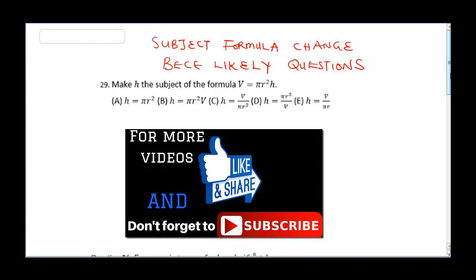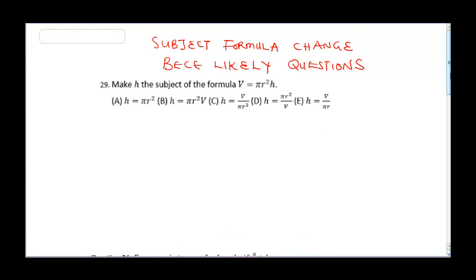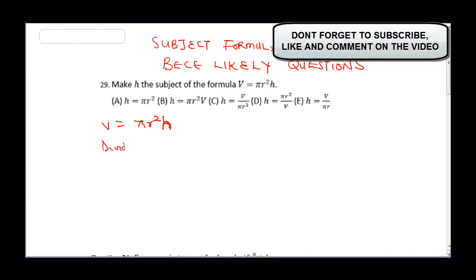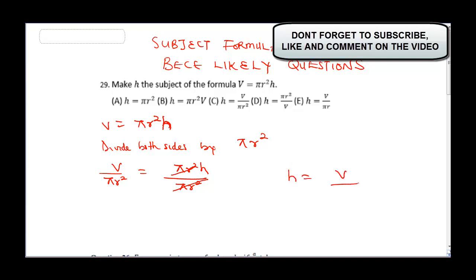The first one says make H the subject of the formula, given that V is equal to πR²H. Since we're looking for H, we have to eliminate all other variables except H. So we divide both sides by πR². We get V over πR² is equal to πR²H over πR². Notice that πR² cancels πR², leaving us with H is equal to V over πR².